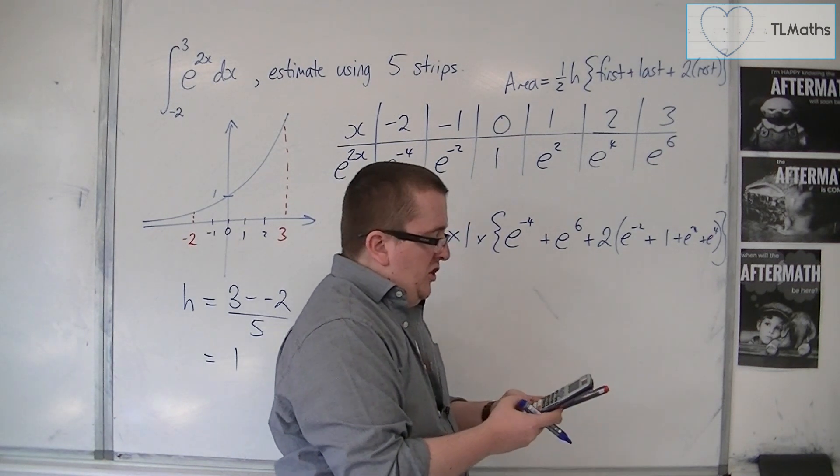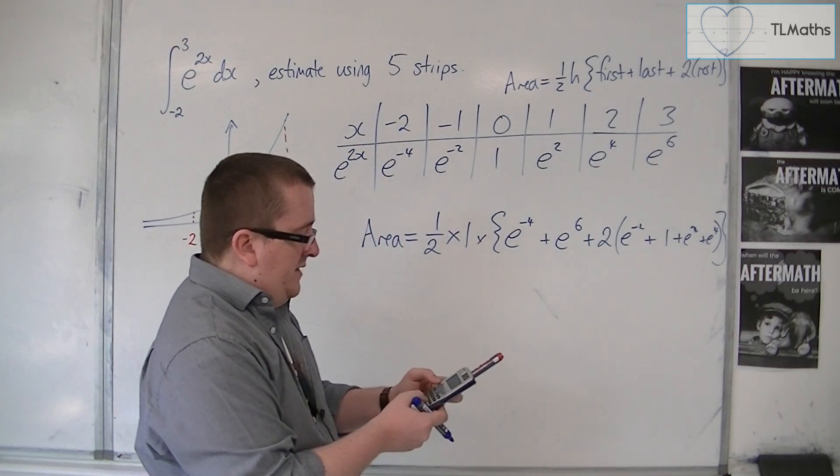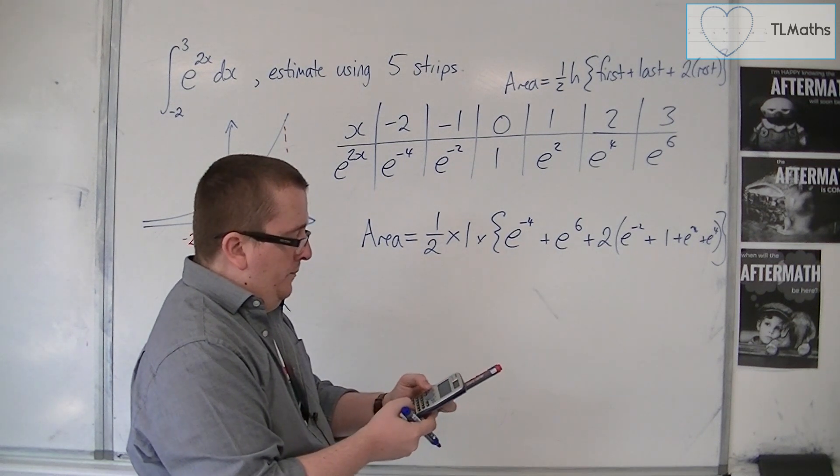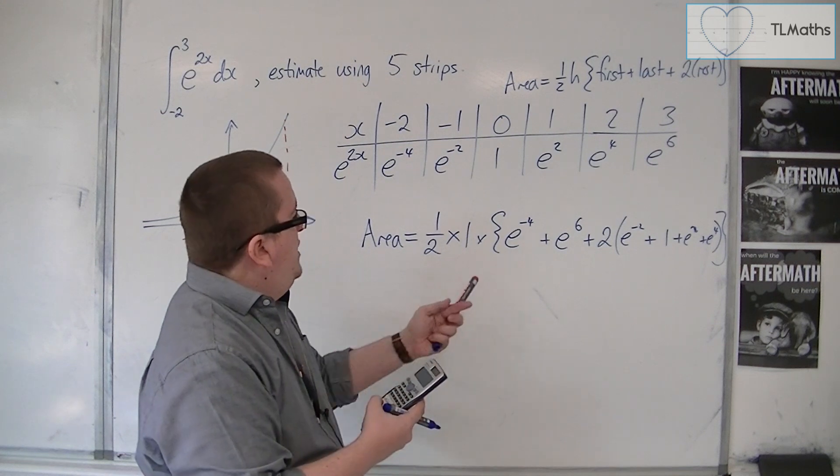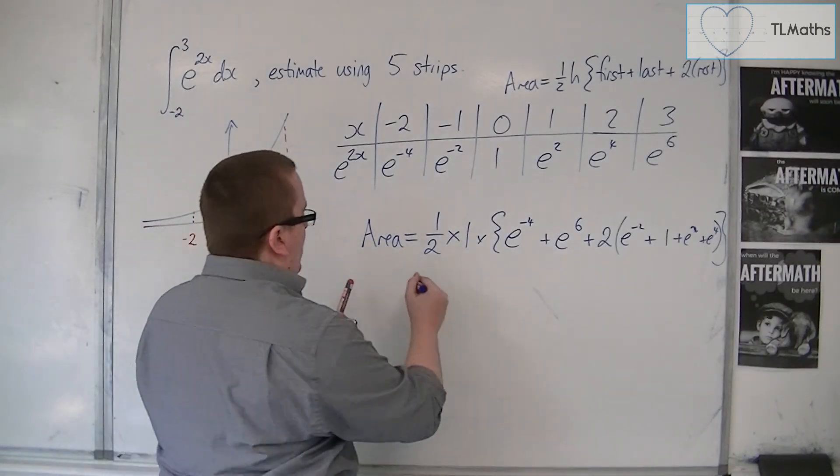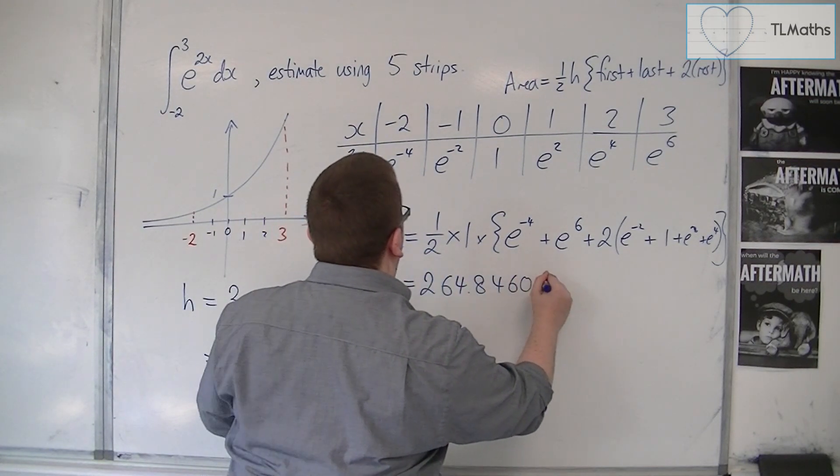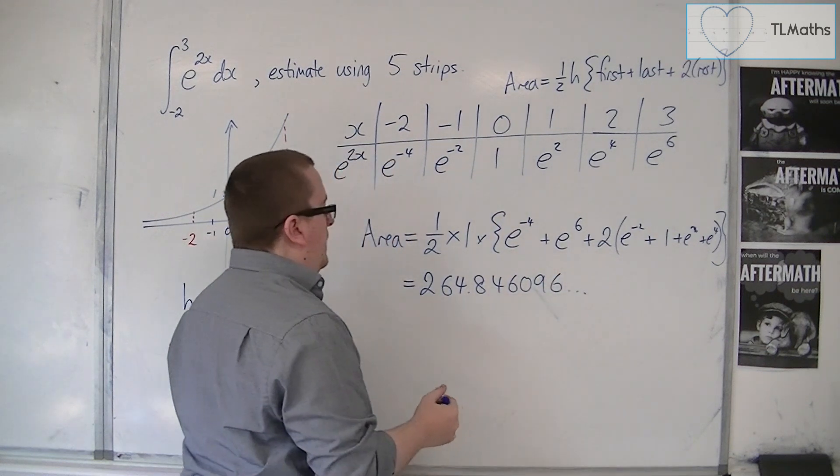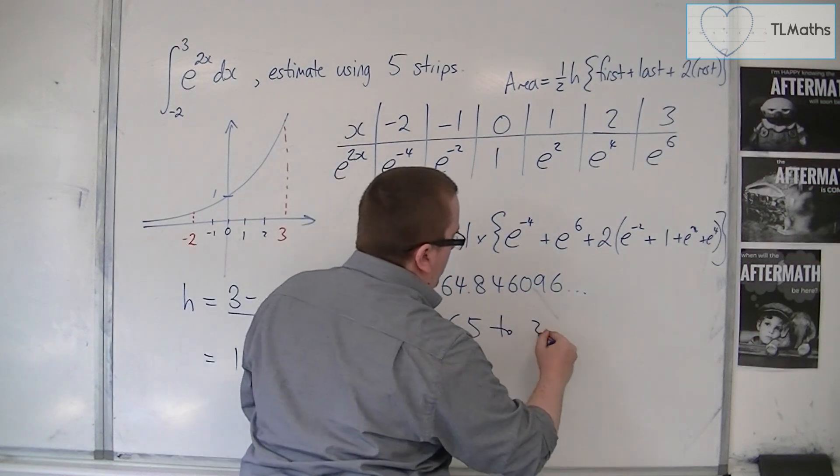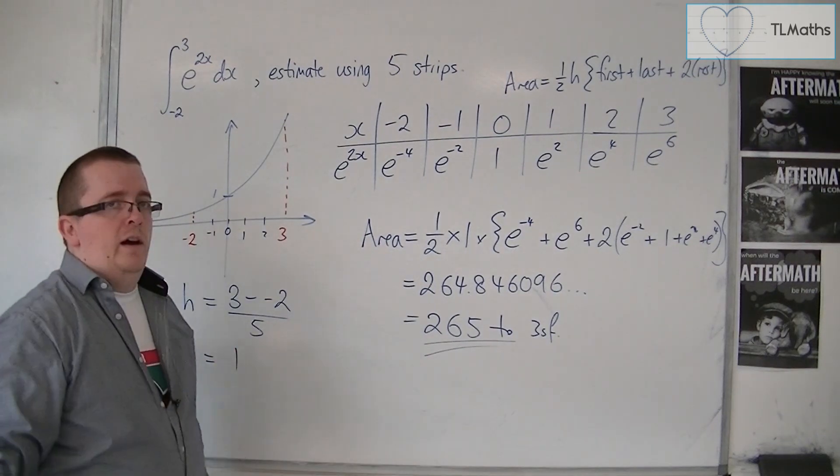You're then going to times that by 2. So that currently gets us 126.2. Then add on e to the 6, then add on e to the minus 4. And then you want to times it by 1 half, so divide by 2. And that gets you 264.846096. So to three significant figures, that's 265. And that is the estimate for our area.